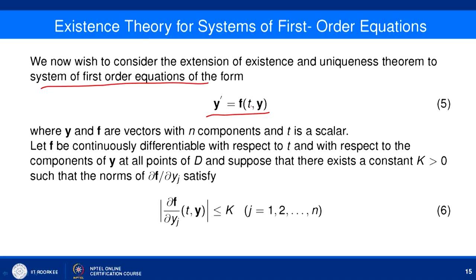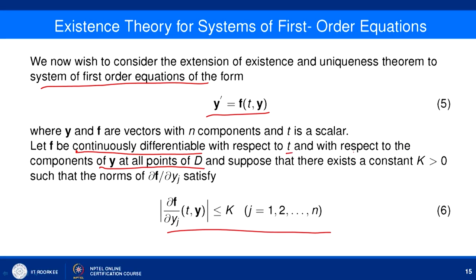Using vector notation, we write the system of first-order equations as y' = f(t,y). To get the existence and uniqueness theorem, we generalize Theorem 1 using the Picard iteration scheme. We assume f is continuously differentiable with respect to t and the components of y at all points of D, and there exists a constant K > 0 such that the norms of ∂f/∂yⱼ satisfy the bound ‖∂f/∂yⱼ‖ ≤ K.